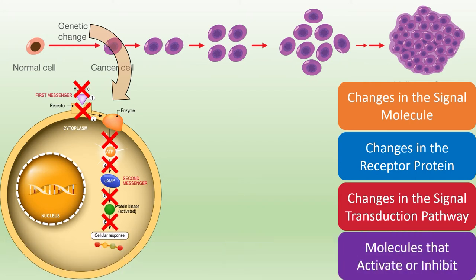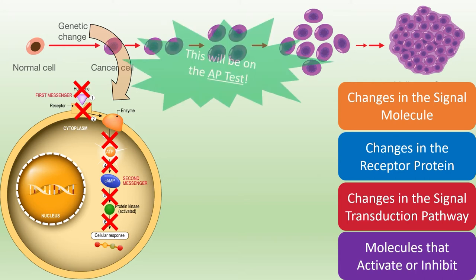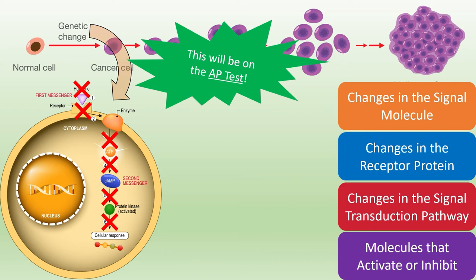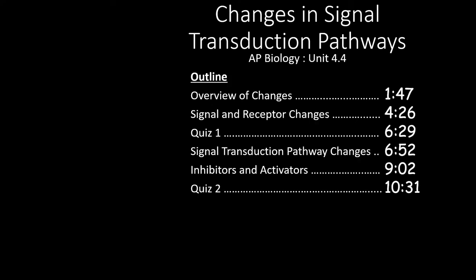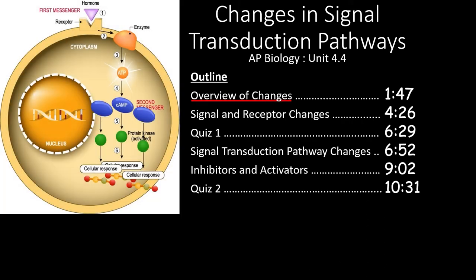Plus we'll see how molecules in the environment, whether natural or artificial, can both activate and inhibit various cellular signal transduction pathways. There will definitely be questions on the AP test that ask you to evaluate changes to signal transduction pathways, so stick with us as we cover how to evaluate changes in signal transduction pathways. This video covers section 4.4 of the AP Biology curriculum.